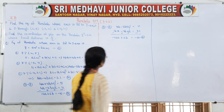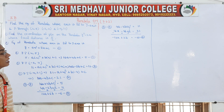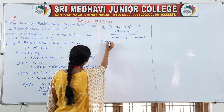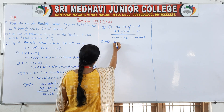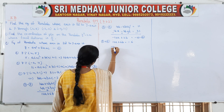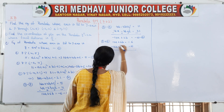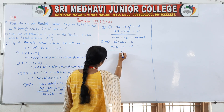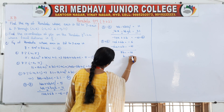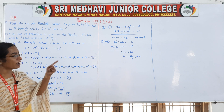Observe equations 5 and 6: fifth has 12a and sixth has -12a. Adding equations 5 and 6: 12a + 6b + (-12a + 2b) = -6 + (-10). The a terms cancel, giving 8b = -16, so b = -16/8 = -2. We have found the value of b.